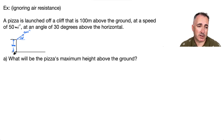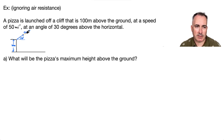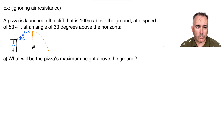It's at an angle of 30 degrees above the horizontal. The first part of the question asks: what's the maximum height above the ground? What kind of path will this follow? It's going to go like a nice parabola and fall down. So when we talk about maximum height above the ground, we care about the peak of that path.